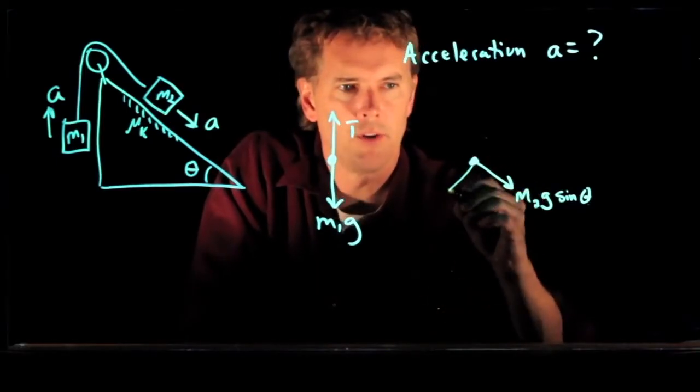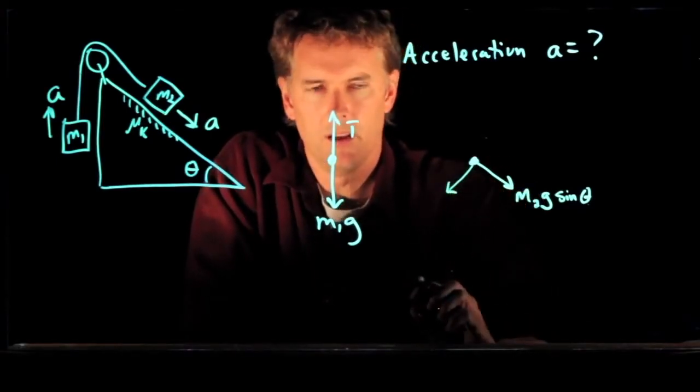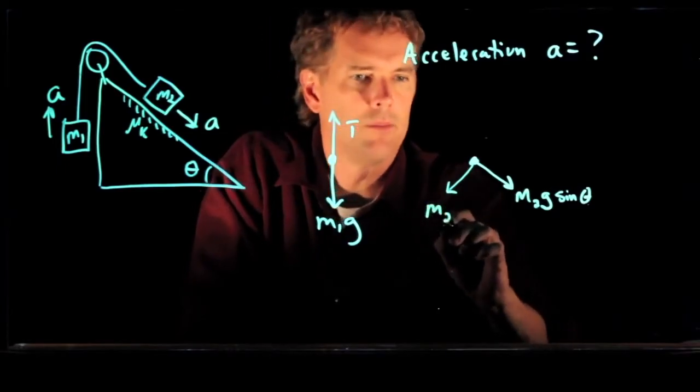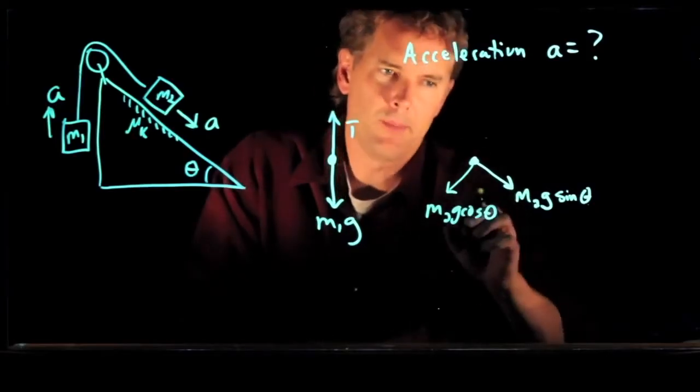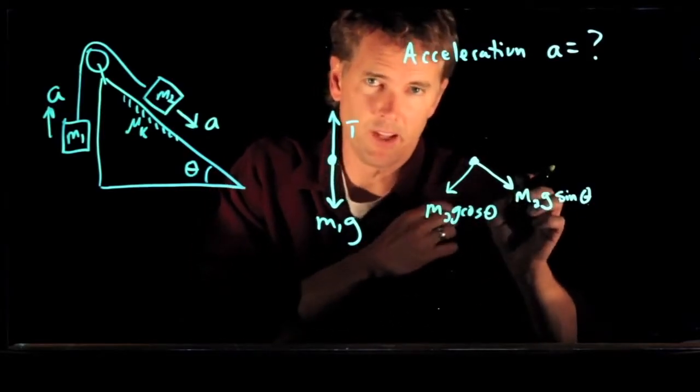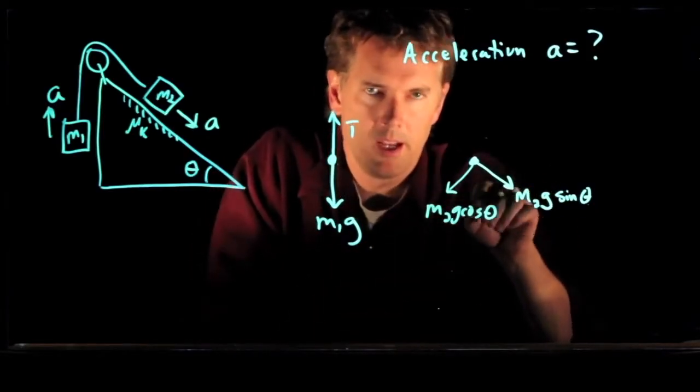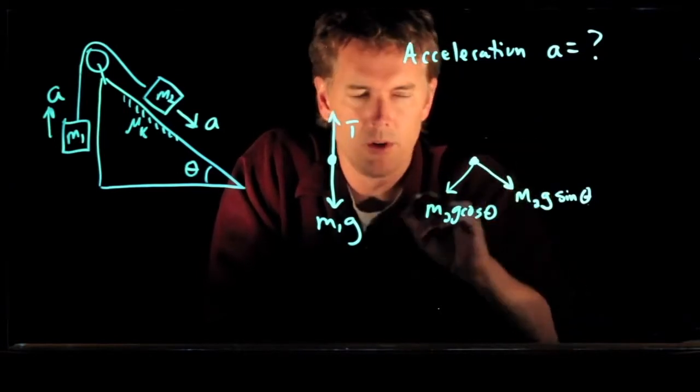There is another component of gravity, which is into the plane. And that is M2g cosine of theta. Again, if you can't remember which is which, look at the limits as theta goes to zero. And that should tell you if you have it right or you have it backwards.